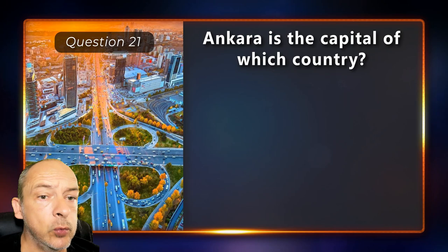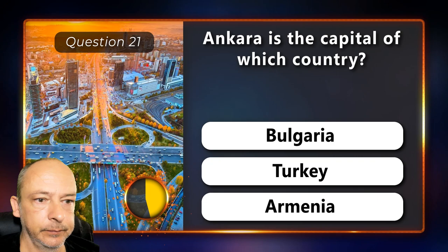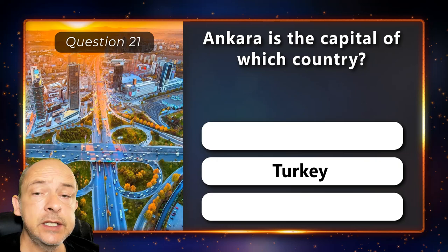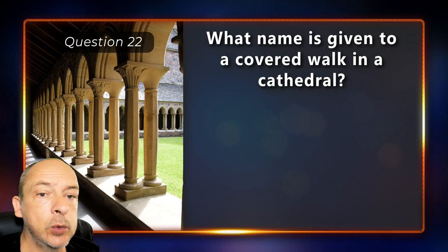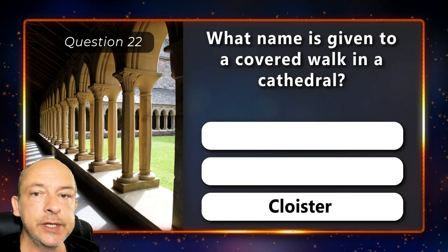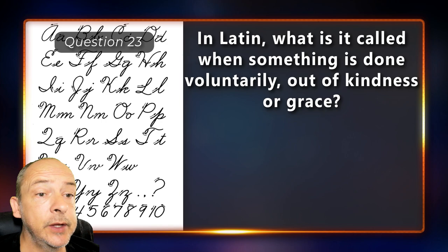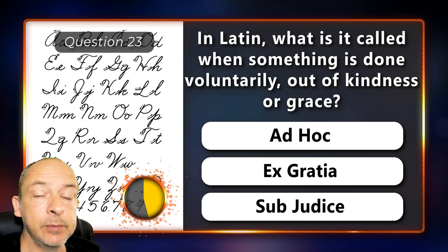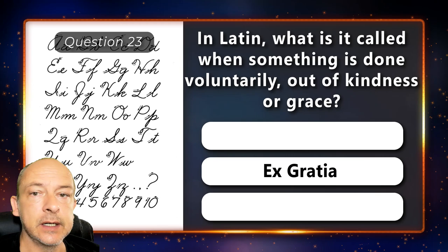Ankara is the capital of which country — is it Bulgaria, Turkey or Armenia? The correct answer is Turkey. What name is given to a covered walk in a cathedral — is it a convent, a nave or a cloister? It's called a cloister. In Latin, what is it called when something is done voluntarily out of kindness or grace — is it ad hoc, ex gratia or sub judice? Ex gratia.